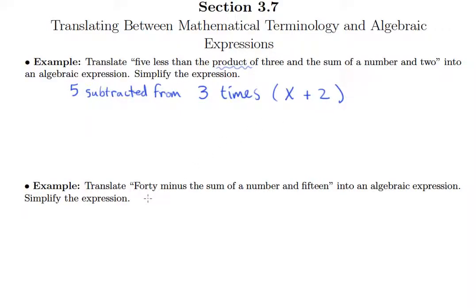So you can see we've already broken this down quite a bit. Let's go ahead and get rid of this word times, so it's now just five subtracted from three times X plus two. And then we know that when we have five subtracted from something, we need to switch the order. So the three times X plus two comes first.